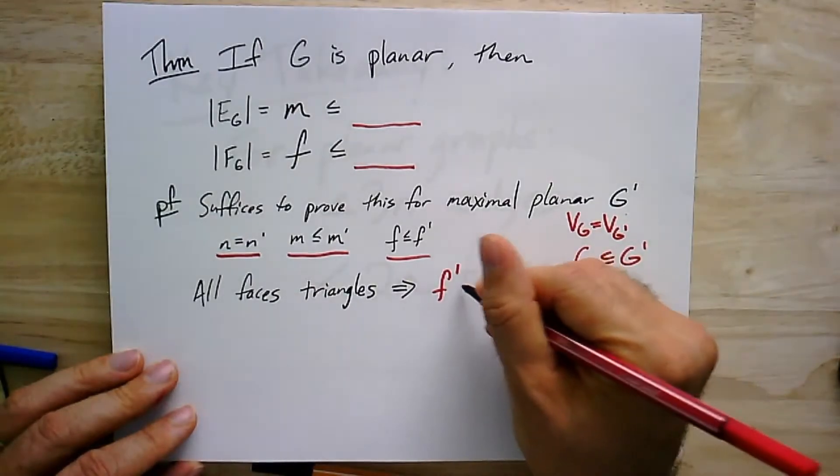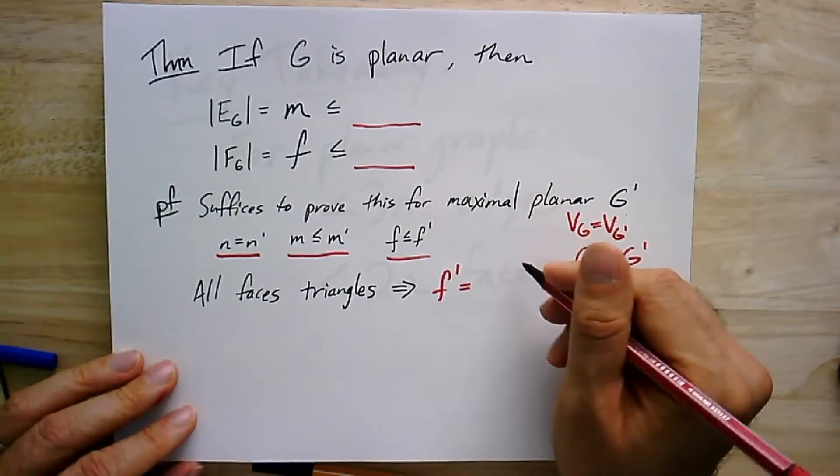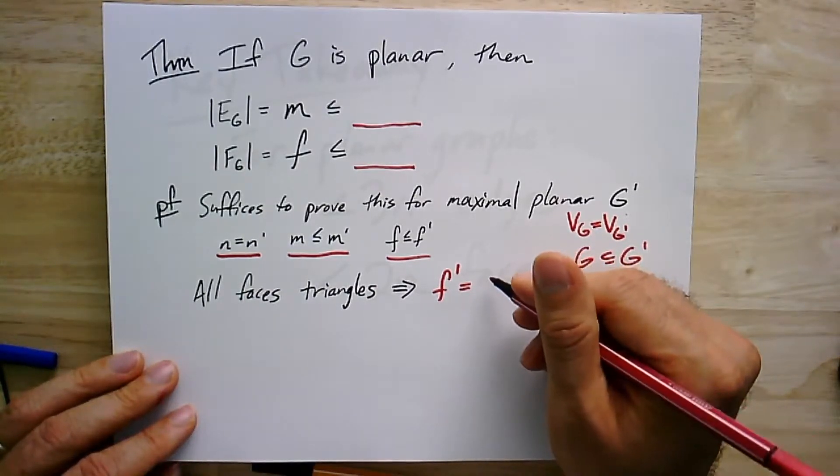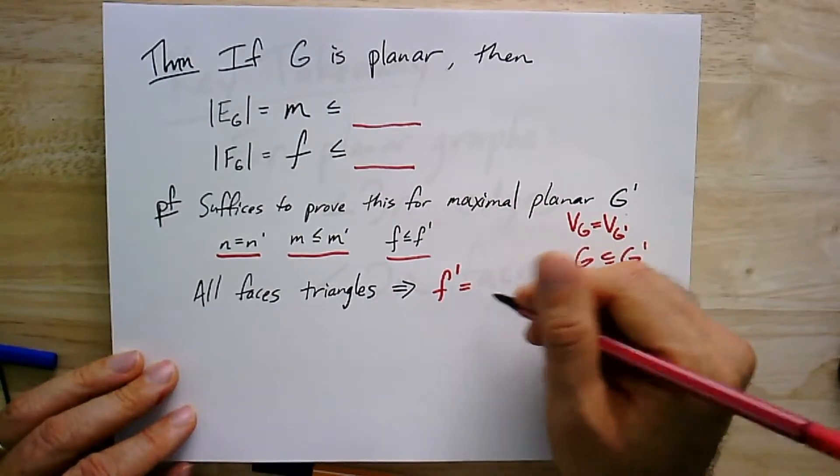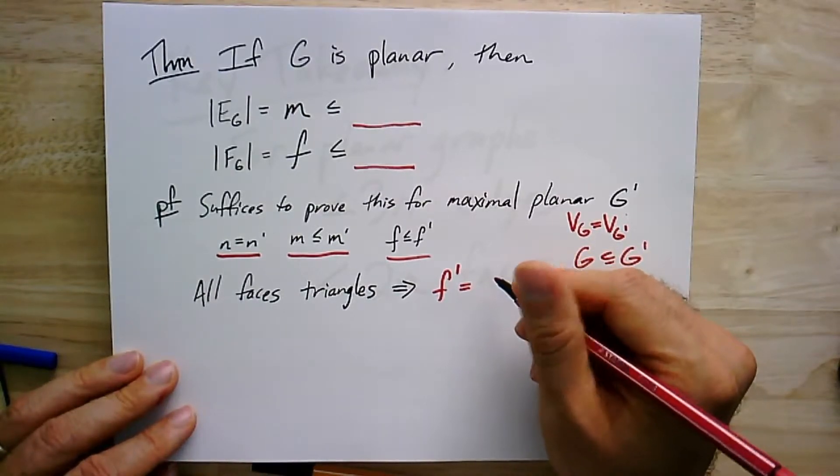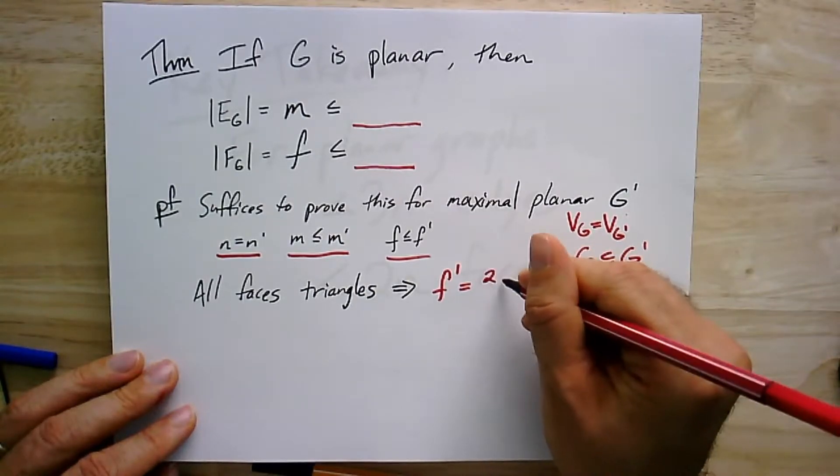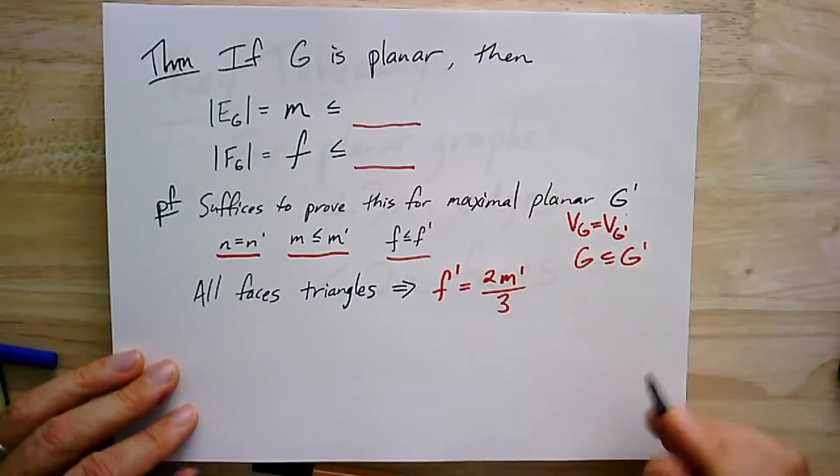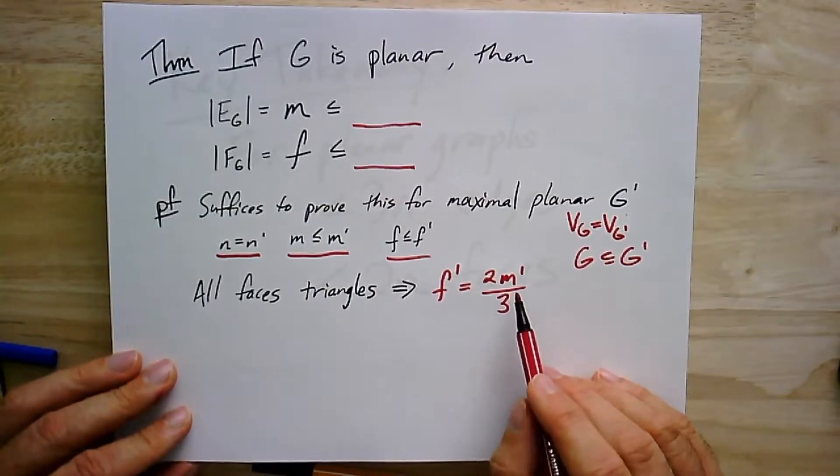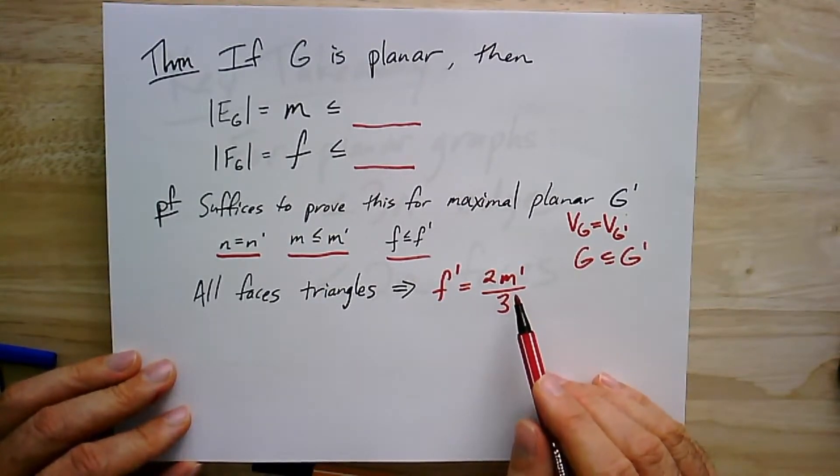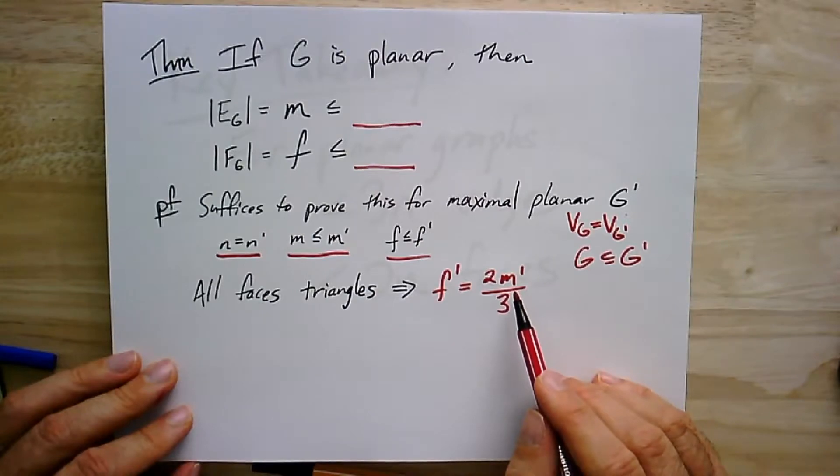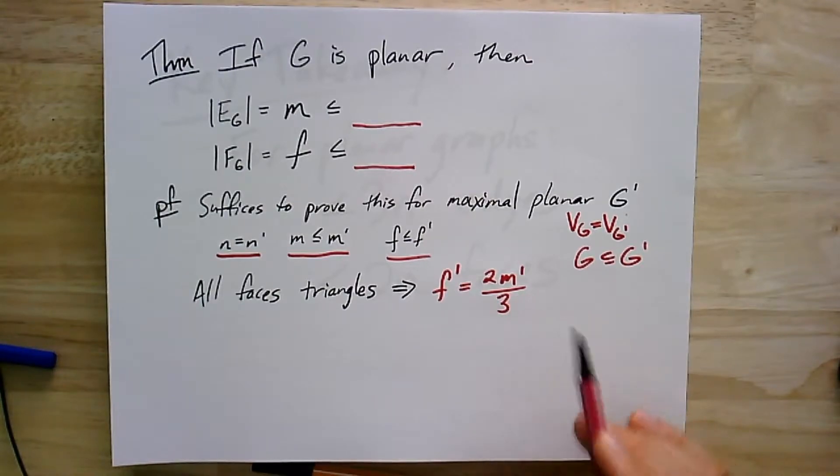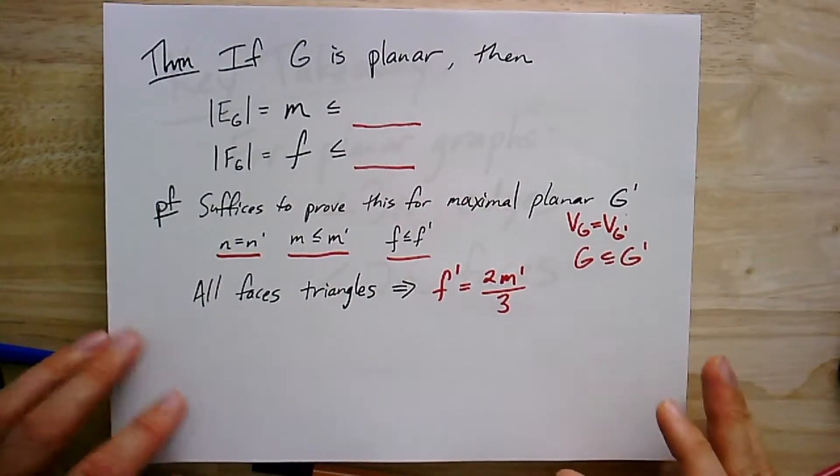So if I look at f' with number of faces in any embedding of this graph G', this is going to be, since they're all triangles, I'm going to have three edges per face. But every edge gets then counted twice. So I think I should get 2m' over 3. The other way to do this would be the other way around, which is to try to count the number of edges in terms of the number of faces. And you'd see that each edge gets counted by two faces. It counts for one third of each face. So let's plug this in and see if it works.